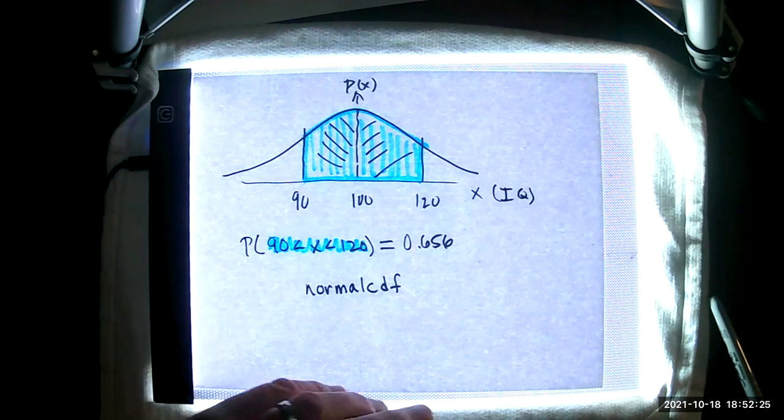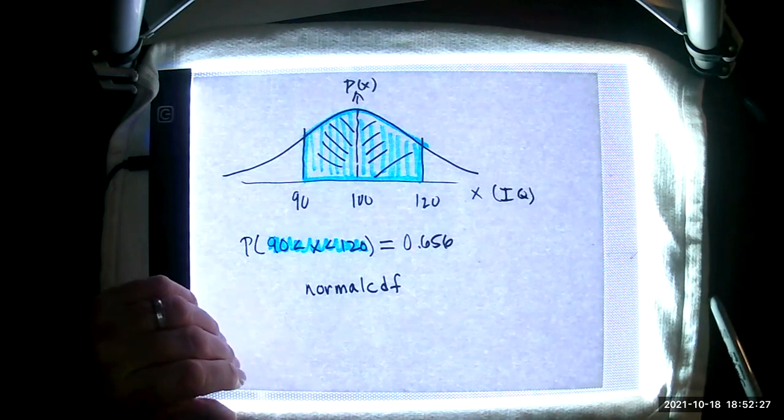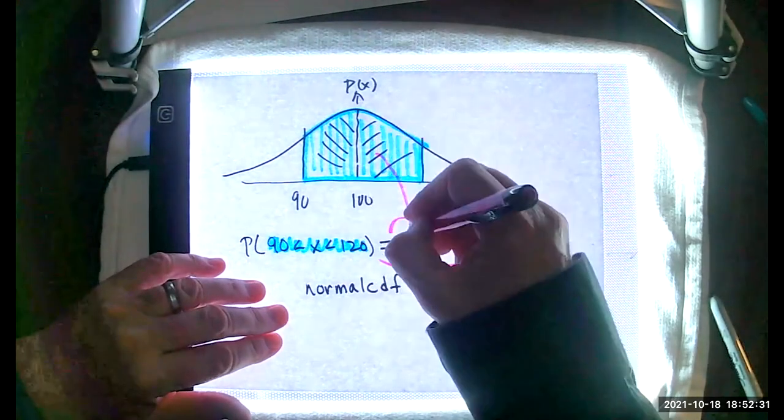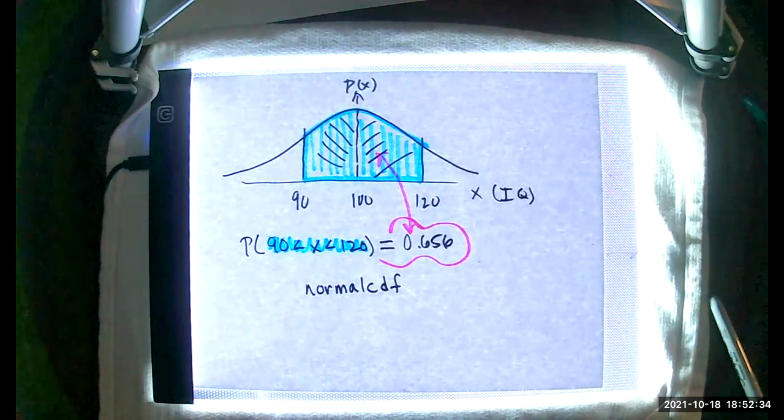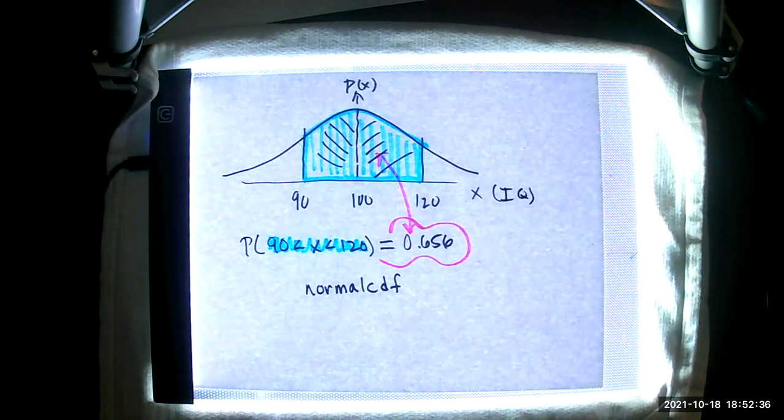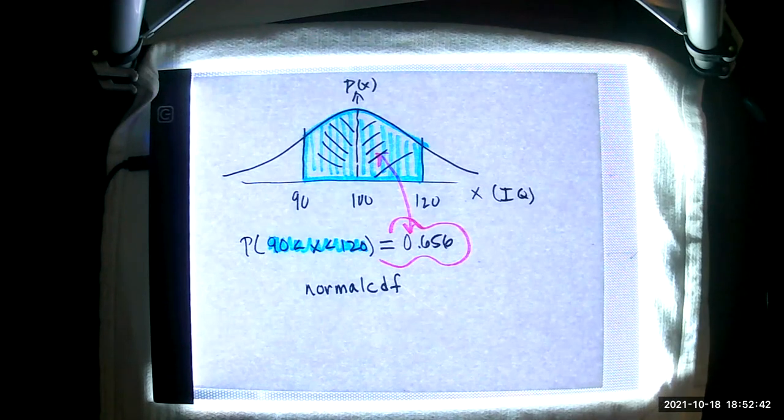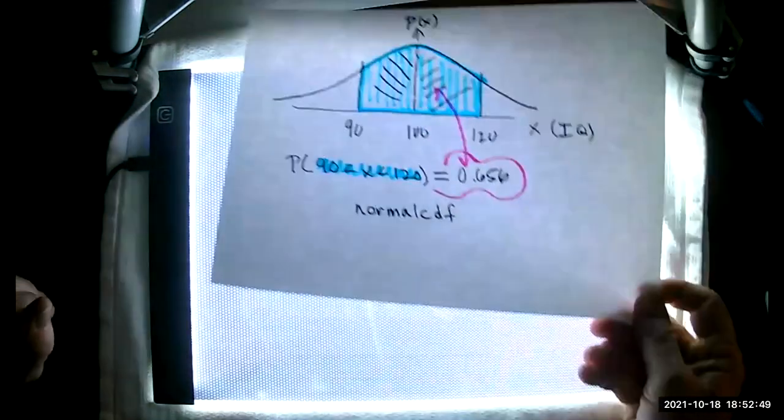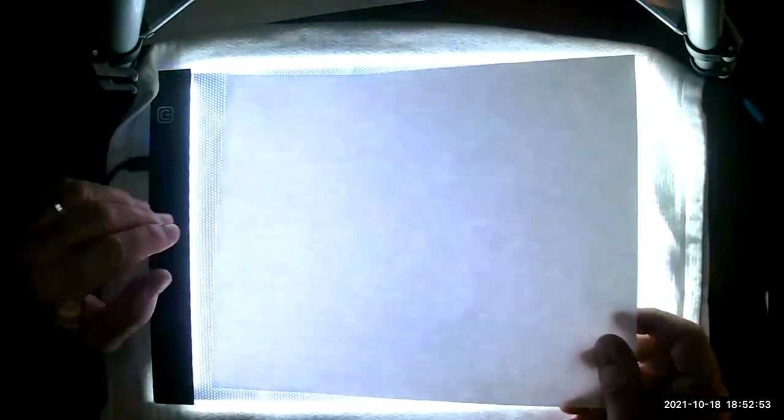Let me stop the sharing and come back over to my calculator. 0.656. It's really important that you remember that this probability here and this area are the same thing. Identical. Normal CDF, you always, the data always goes into that function in the same way. They call that the syntax.